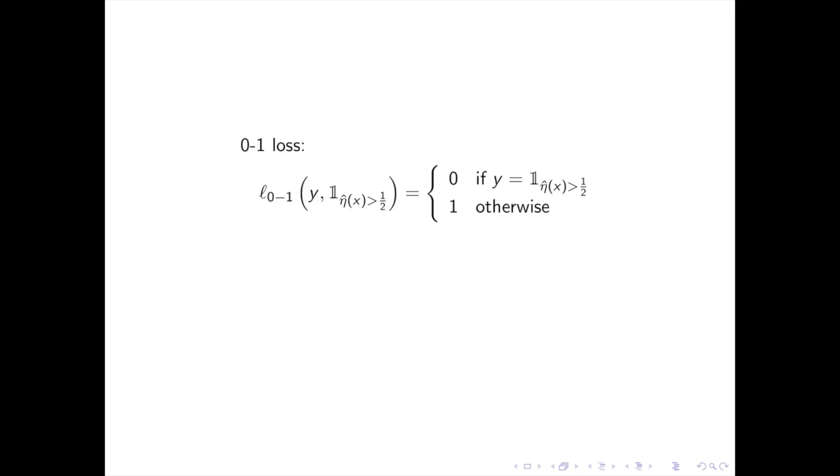Now probably the best way to evaluate our estimator eta hat is the 0,1 loss. So for any fixed given pair x,y, the 0,1 loss of our predictor is equal to 0 if the label y is correctly predicted, and 1 otherwise. The 0,1 risk is defined as the expectation of the 0,1 loss on the pairs x,y. At this point, it might be tempting to look for eta hat minimizing the 0,1 risk. However, this problem is extremely difficult because the 0,1 loss only takes the values 0 and 1.